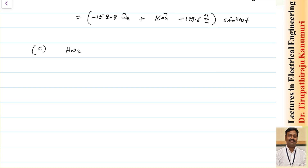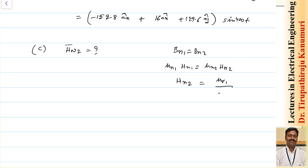The magnitude can be found as the square root of the sum of squared components. Now for Hn2: from the boundary condition Bn1 = Bn2, and since B = mu × H, we have mu1 Hn1 = mu2 Hn2. The mu naught cancels, giving Hn2 = (mu r1 / mu r2) × Hn1 = (10/2) × Hn1 = 5 × (52.8 ax - 66 ay + 70.4 az) sin(400t).